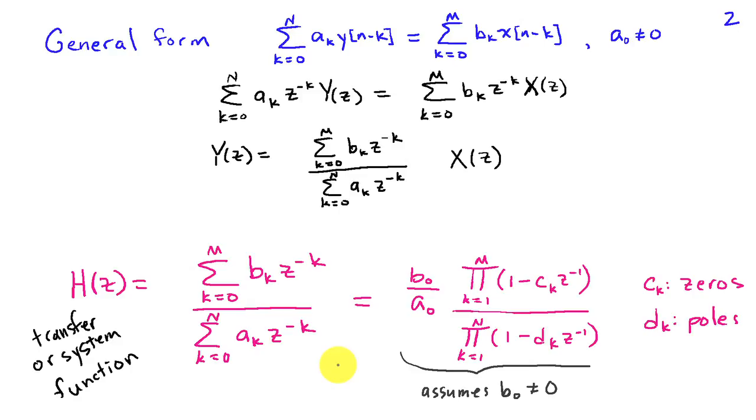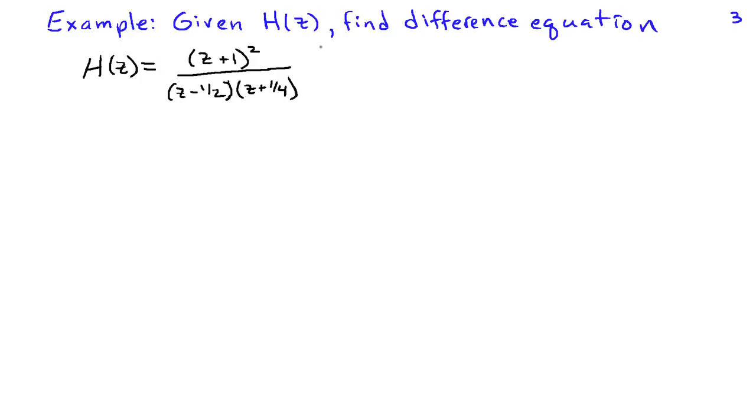Well, as a further example of the relationship between the difference equation and the system function or transfer function, let's start with an H of z, and we'll find the corresponding difference equation. So here we have H of z is equal to z plus 1 quantity squared divided by z minus 1 half times the quantity z plus 1 quarter. In order to relate this to the difference equation, we have to write it out in terms of z inverse.